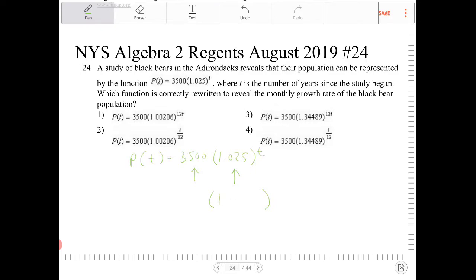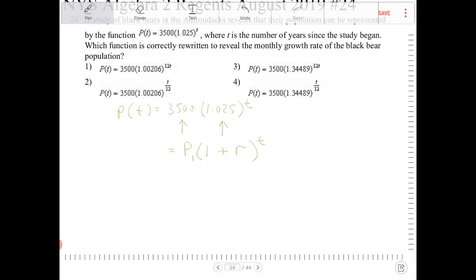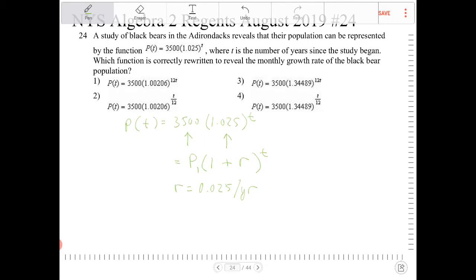So my r in this case is equal to 0.025 per year. But we don't want per year. What the question is asking for is to transform this equation so that it will reveal the monthly rate of growth.